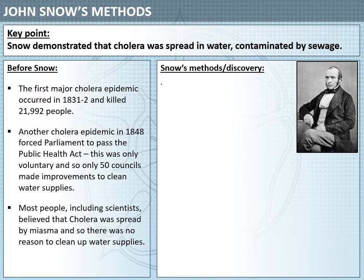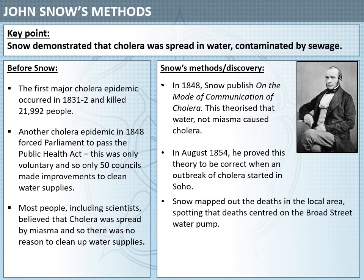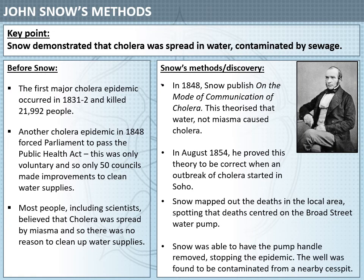So what did John Snow do? In 1848 he published his book On the Mode of Communication of Cholera, which theorised that water, not miasma, caused the disease. In August 1854 he proved this theory correct when an outbreak of cholera started in Soho, near where he worked. Snow mapped out the deaths in the local area, putting dots on a map noting how many people had died in each house. He spotted a pattern: deaths centred on the Broad Street water pump in the middle of Soho. He had the pump handle removed, and as people were no longer using the contaminated water, the epidemic stopped.